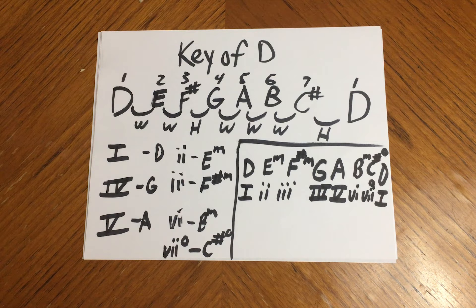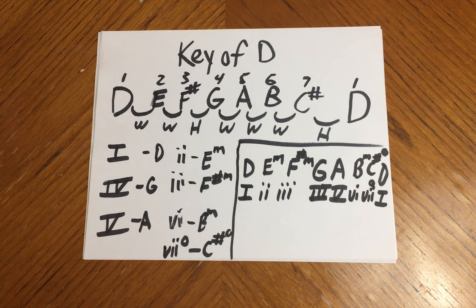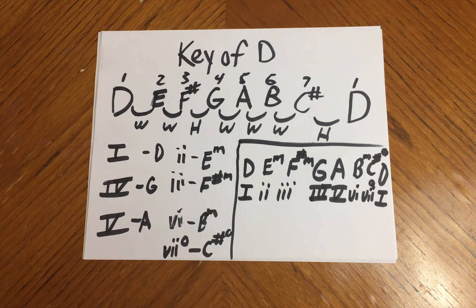D, E minor, F sharp minor, G, A, B minor, C sharp diminished, and D again from D.